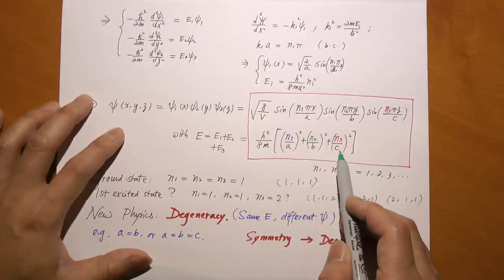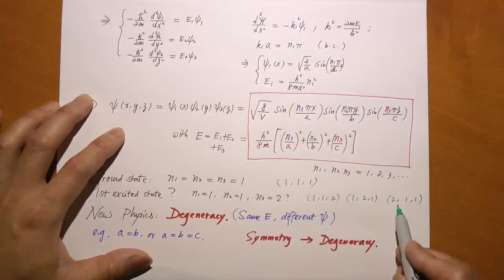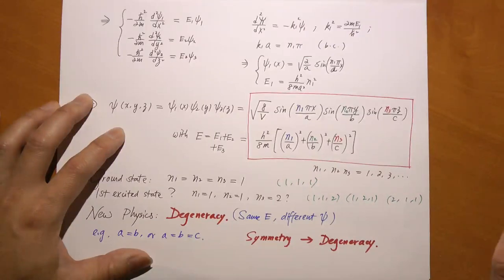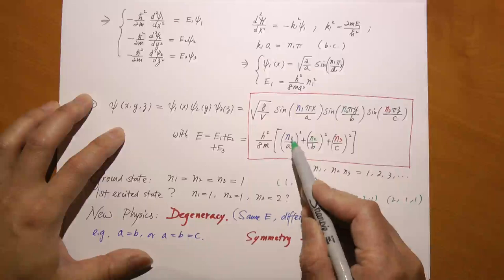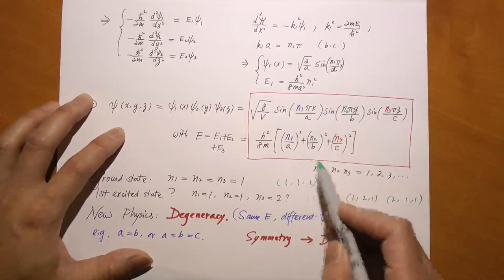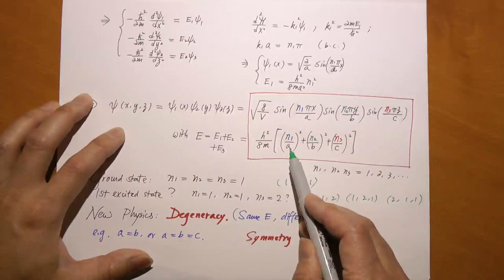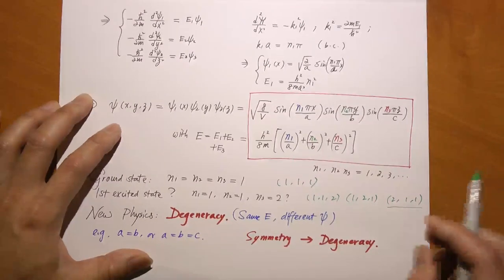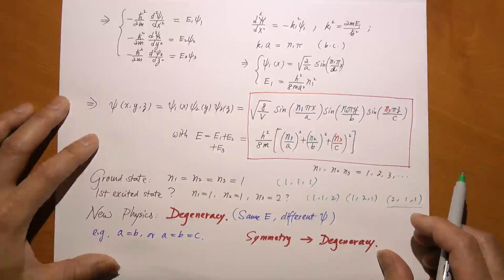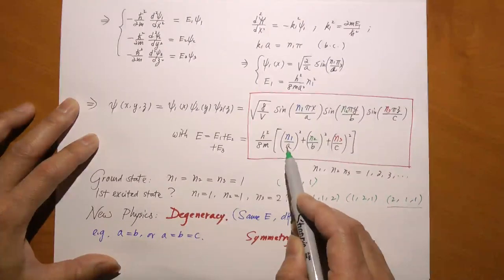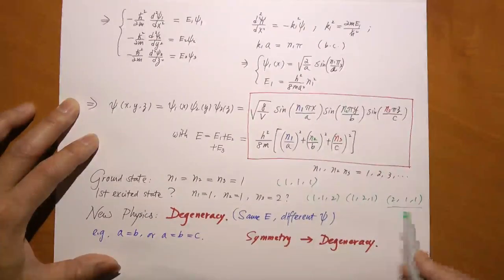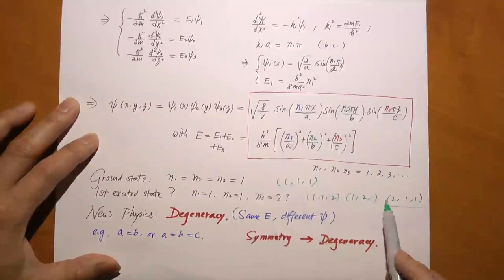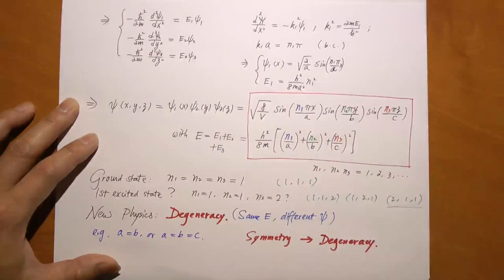What you want is to put the 2 on whichever of A, B, or C has the largest value, because then the reciprocal is not that large, so even changing to 2 doesn't cost much energy. So if A is the largest of the three dimensions, you want N1 to be 2, and you choose (2,1,1). If A is the longest and B and C are shorter but unequal to each other, then this is the only possibility for the first excited state. There is one wave function for the ground state and one wave function for the first excited state when A, B, C are all different widths.